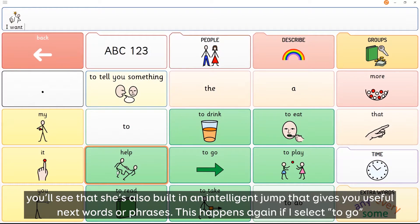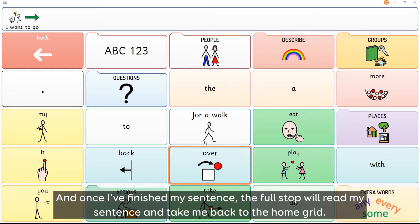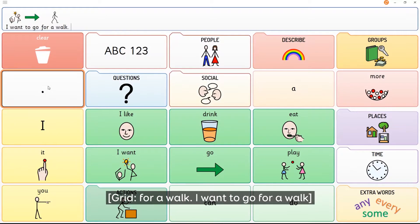You'll see that she's also built in an intelligent jump that gives you useful next words or phrases. This happens again if I select to go. And once I've finished my sentence, the full stop will read my sentence and take me back to the home grid. I want to go for a walk.